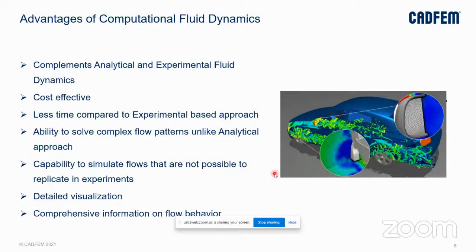What are the advantages of Computational Fluid Dynamics? It complements analytical and experimental fluid dynamics by providing a cost-effective way to study fluid flows. It has the ability to solve complex flow patterns that cannot be solved using an analytical approach, as well as the ability to replicate flows faster than the experimental approach. It enables detailed visualization and gives comprehensive information of flow features using contours, pathlines, and vector plots. In CFD, we can zoom into the area of interest and observe flow patterns, which is not possible in experiments.